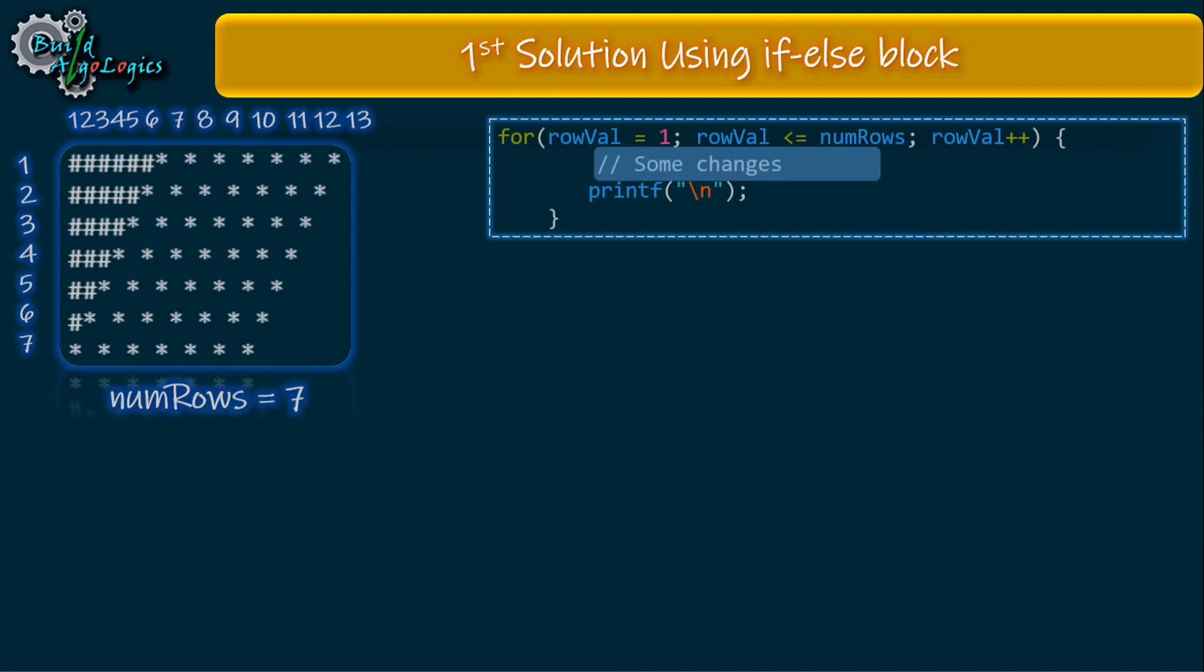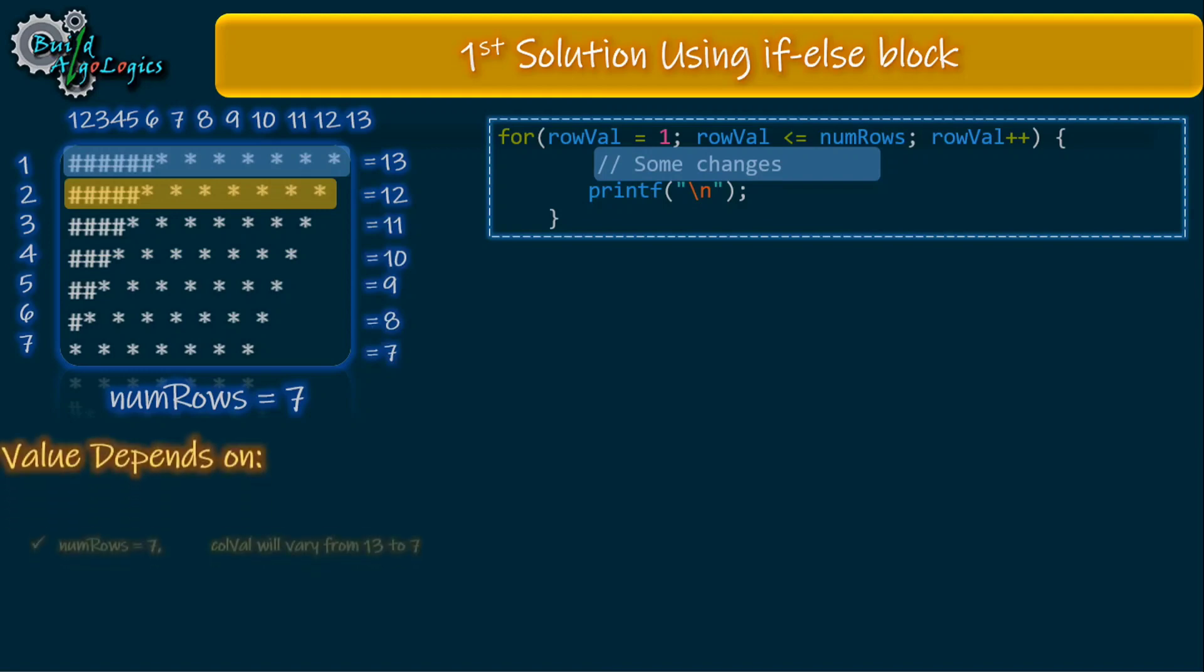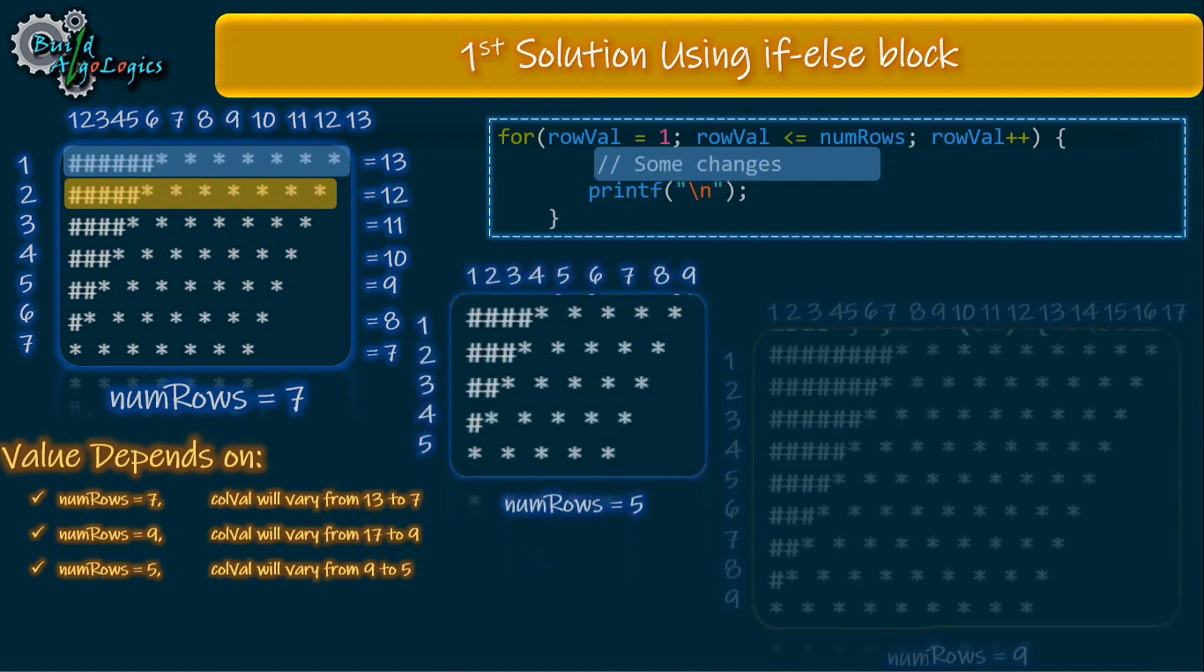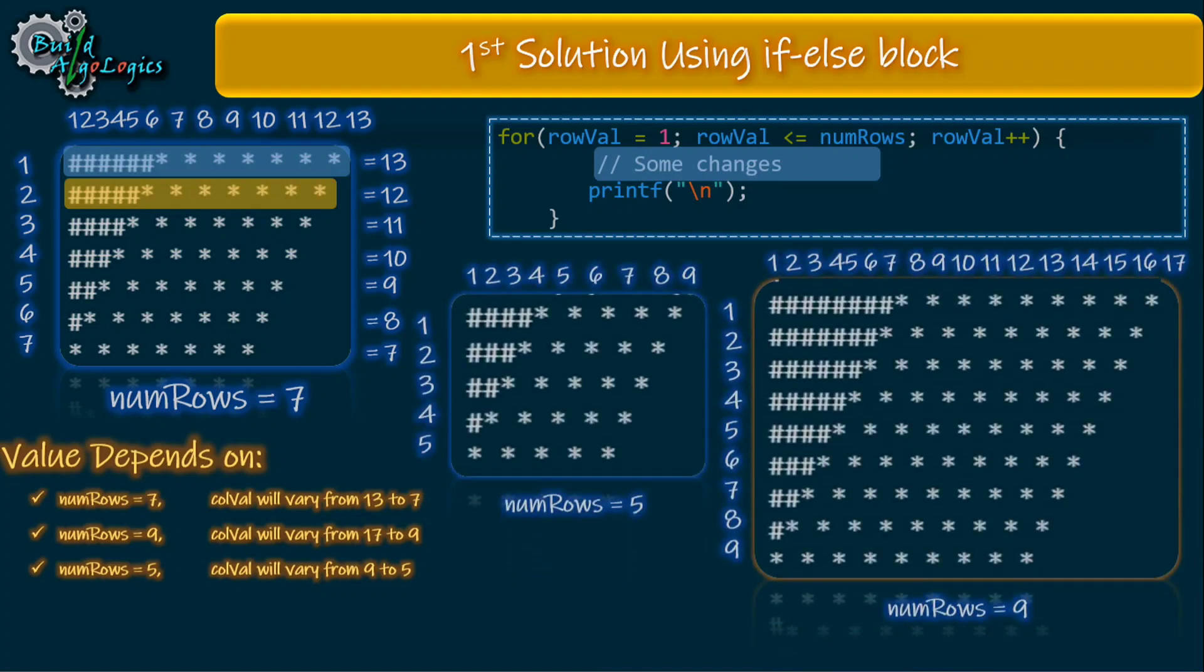When row value is 1, column value is 13. When it is 2, column value is 12, and so on. This value 13 also depends on the number of rows. For example, if number of rows are 7, the value of column will vary from 13 to 7. When the number of rows are 9, this value will vary from 17 to 9. When the number of rows is 5, column value will vary from 9 to 5. You will get these things clear in a better way by looking at these two more outputs.